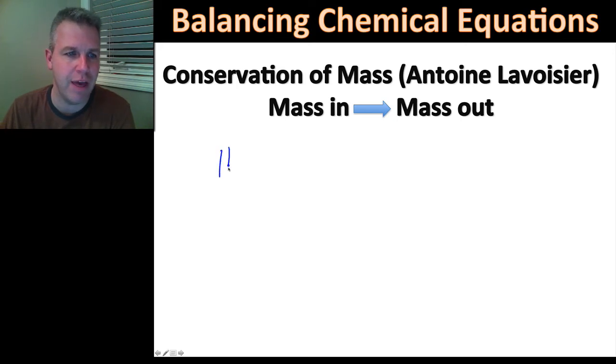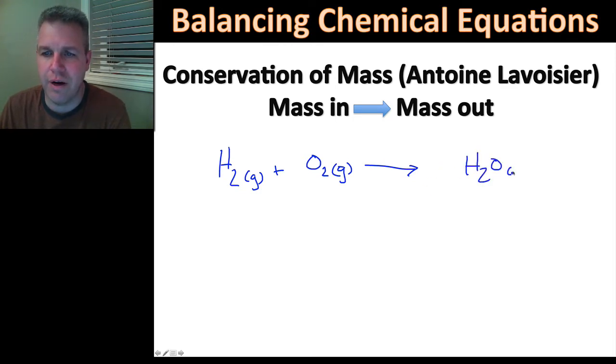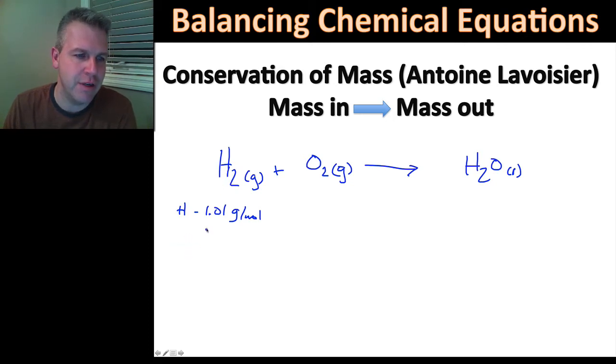The first one we're going to look at is hydrogen gas plus oxygen gas, and remember that both of those are diatomic. That's going to yield water, and water is going to be a liquid. When you look on your periodic table, hydrogen has an atomic mass number of 1.01 grams per mole. Don't worry about the unit right now. This tells me I have two of those, so 1.01 plus 1.01 gives me a total mass of 2.02.